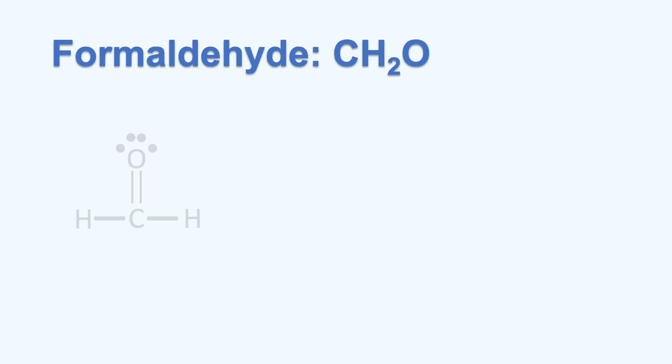Here is the Lewis structure for formaldehyde, which we drew in an earlier video. I'll remove the lone pairs of electrons from the oxygen atom so we can have a less crowded view. And let's focus on the central atom, carbon, which is highlighted here.